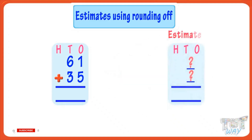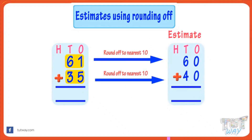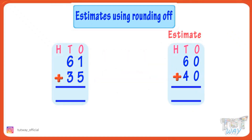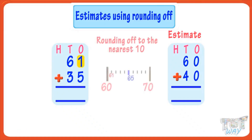For that, we will round off 61 and 35 to the nearest ten and then add them orally to get the estimate. For rounding off numbers to the nearest ten, we see the ones digit. If it's less than five, we round the number down to the previous ten — that is 60 in this case. And if the ones place digit is five or more, we round the number up to the next ten — that is 70 in this case.